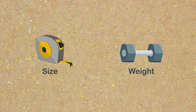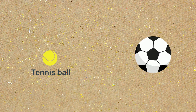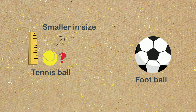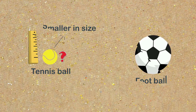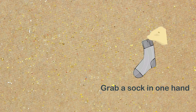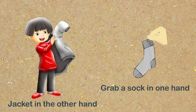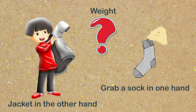For example, when we compare a tennis ball with a football, we can tell that the tennis ball is smaller in size, but we do not know exactly how much smaller it is. Similarly, when we grab a sock in one hand and a jacket in the other hand, we feel that the jacket is heavier than the sock, but we do not know exactly how much the jacket and sock weigh.